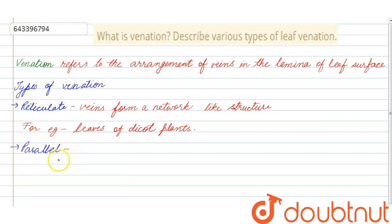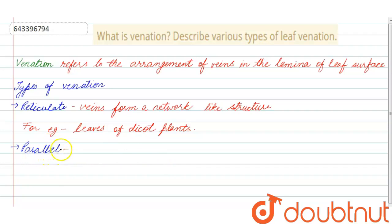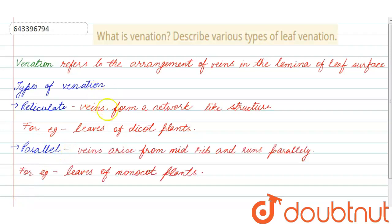In parallel venation, veins arise from the midrib and run parallelly. An example of parallel venation is the leaves of monocot plants, so we can observe parallel venation in the leaves of monocot plants.